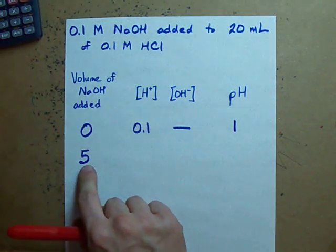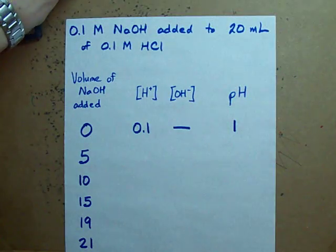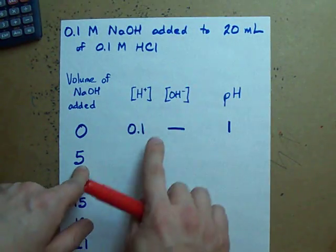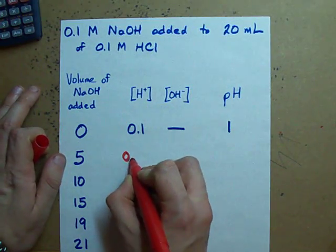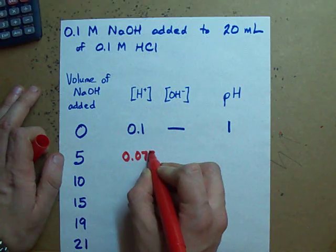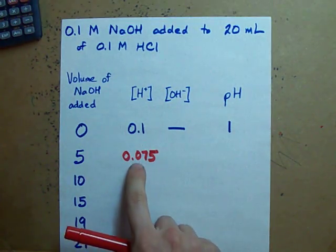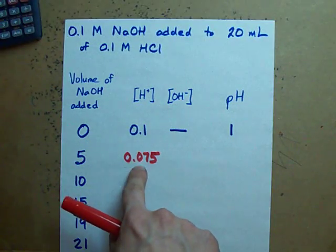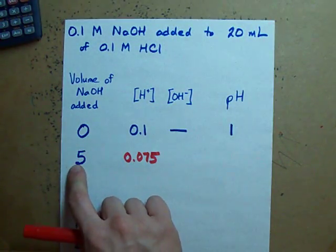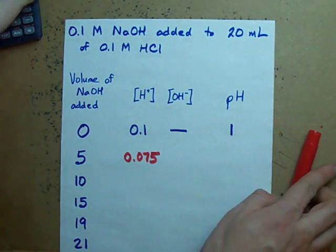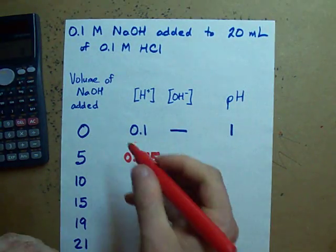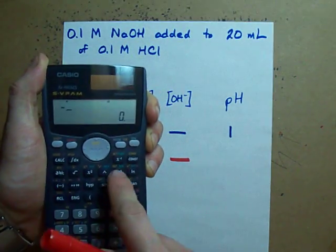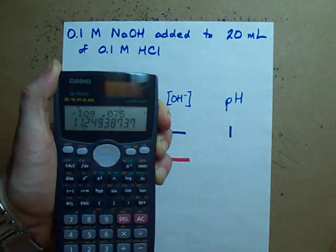So what happens when I add 5 milliliters of the NaOH? Well I've titrated away one quarter of my acid which means the concentration of acid that I have is approximately three quarters of what it was. Now I'm not accounting for the fact that the volume is actually diluted here. I'm just going to assume that the NaOH itself titrated away a quarter of the acid because we added 5 milliliters to 20 milliliters. Because my H+ concentration is so high I still don't have OH- and the pH of my solution is negative log 0.075. My pH is 1.12.